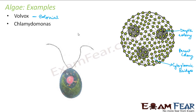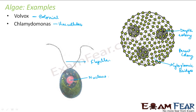The next example is Chlamydomonas, which is a unicellular algae — it consists of one single cell. It has a flagella which helps in its movement. Inside this single cell structure you see a nucleus, shown as a pink colored structure. It also has a cell membrane as a protective covering. Inside the cell it has all organelles like mitochondria, chloroplast, etc., and cytoplasm, which is the matrix present inside the cell.